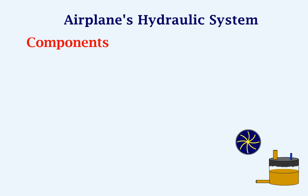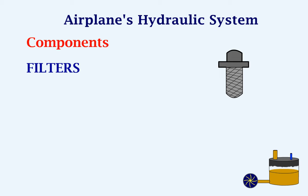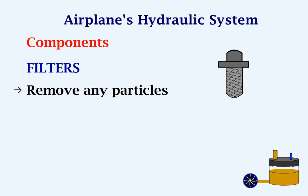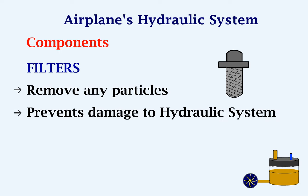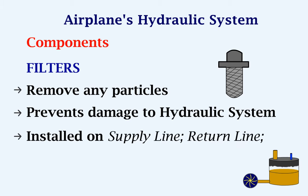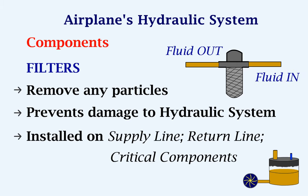The next component we will look at is the filters. Filters are used to remove any particles or impurities from the fluid. This is important because it prevents damage to the hydraulic system. They can be installed on the supply line, the return line, and also before critical components. As the fluid enters and leaves the filter, the impurities in the fluid get collected in the filter.